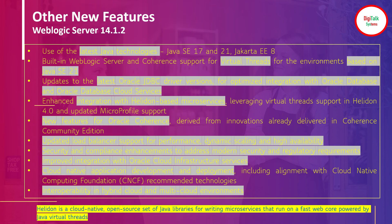Apart from virtual threads, there are a lot of new features coming to WebLogic 14.1.2. There will be support for the latest Java technology. You will be getting virtual thread support based on Java 21 standard, new JDBC driver versions for optimized integration with Oracle Database and Oracle Database Cloud Service, and integration with Helidon-based microservices. Helidon is a cloud-native open-source set of Java libraries used for writing microservices that run on a fast web core powered by Java Virtual Threads. There will also be new features for Coherence and updates to load balancer support in terms of performance, dynamic scaling, and high availability.